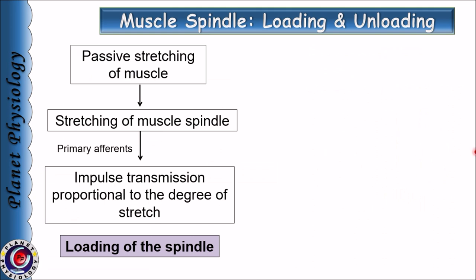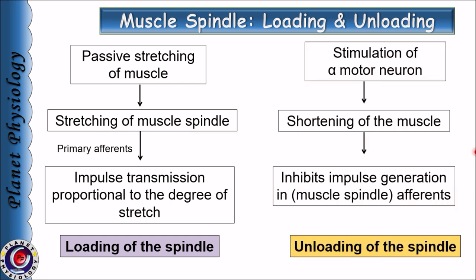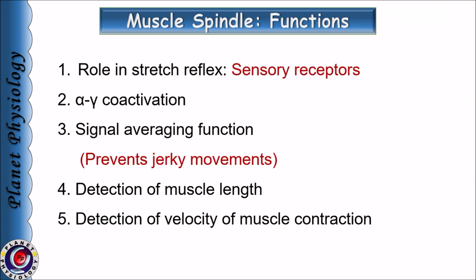Sometimes we come across the terms loading and unloading of the spindle. Passive stretching of the muscle causes stretching of the muscle spindle and this increases the transmission of impulses in the afferent nerve in the same proportion as the degree of stretch — this is called loading of the spindle. Whereas stimulation of alpha motor neurons causes shortening of the muscle and this inhibits impulse generation in the muscle spindle — this is called unloading of the spindle.